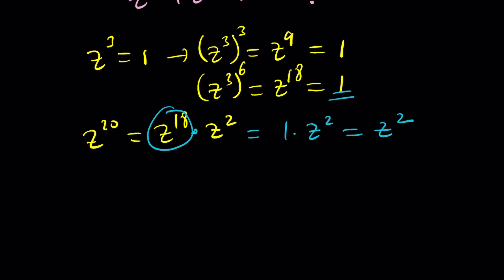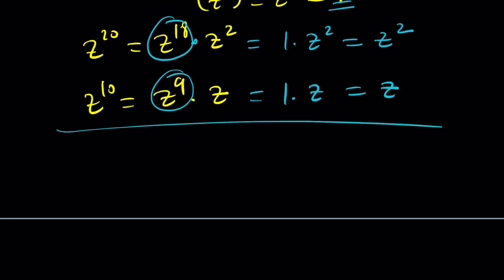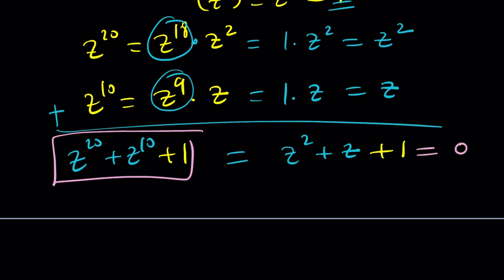By the same token z¹⁰ is z⁹ times z and we know that z⁹ is 1 so this is 1 times z which is z. And then I have 1 which is 1. But if you just add these, z²⁰ + z¹⁰ is going to equal z² + z, and if you add 1 to both sides which is what we're looking for, we get this which is equal to 0. So basically those expressions are equivalent but of course it's kind of hidden from view a little bit, but if you are really strong with complex numbers you probably saw that.